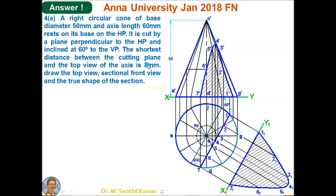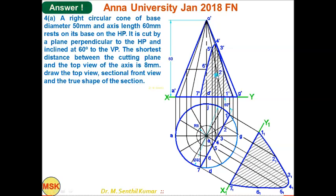Since the cutting plane is perpendicular to HP, it appears as a line in the top view. Draw an R=8 mm circle with O as center in the top view. Set the mini-scale inclined at 60 degrees and draw the cutting line tangent to this R8 circle. This line cuts generators 1, 2, 3, 4, 5, and the base — giving 7 cutting points total. Track all 7 cutting points to complete the sectional front view.